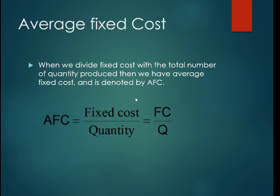Average fixed cost shows how much fixed cost is being paid to produce one unit of quantity. Basically, average fixed cost gives us a single value which represents the overall fixed cost for the production of total goods.